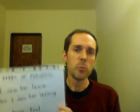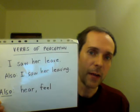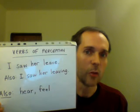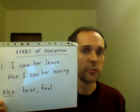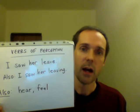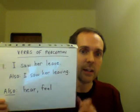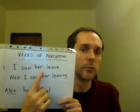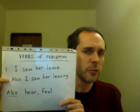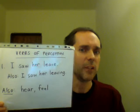A small group of verbs that use the same pattern as let and make are the verbs of perception. We say, I saw her leave, not I saw her to leave. You can also say, I saw her leaving.